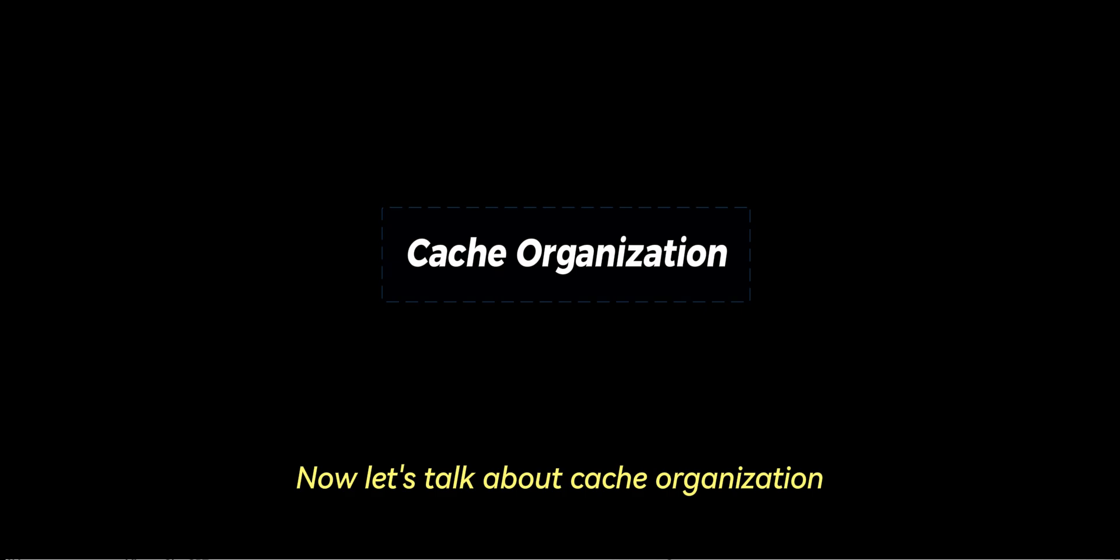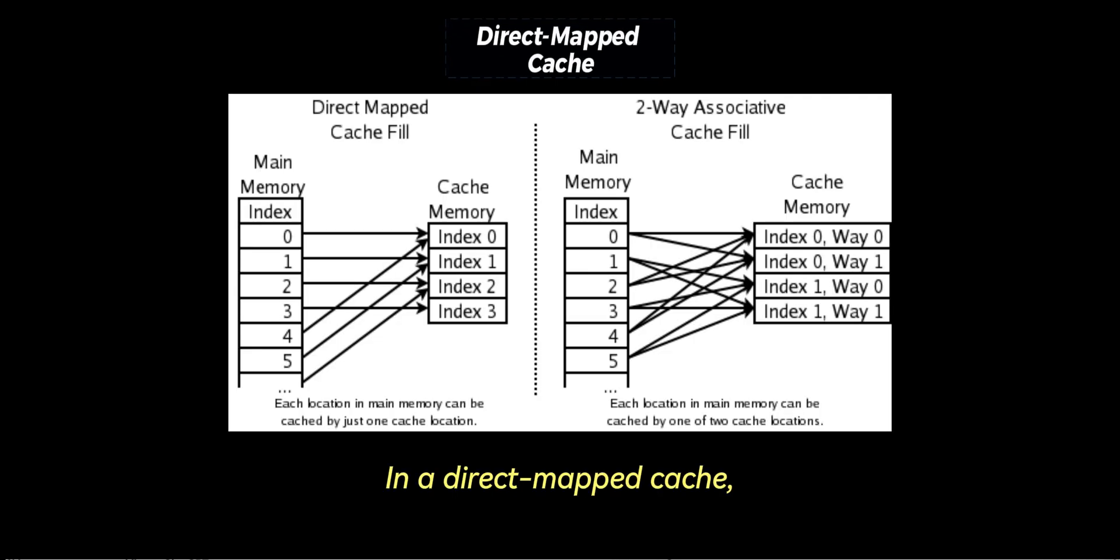Let's talk about cache organization. In a direct mapped cache, each block of memory maps to exactly one cache line. The design is simple and fast, but suffers from conflicts. When two different memory blocks map to the same cache line, one of them gets evicted, even if both are frequently used.